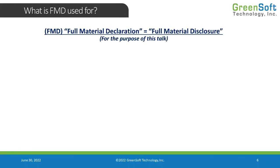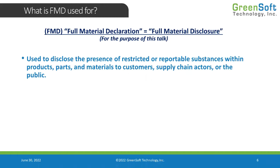What is the FMD used for? An FMD is used to disclose the presence of restricted or reportable substances within products, parts, or materials. We do that to report this information to our customers, to other supply chain actors who maybe aren't even our customers — people like distributors that might want that information, or any other actor in the supply chain who's asking for it, or just generically making it available to the public as part of our environmental policies.